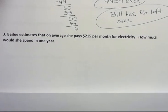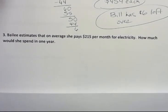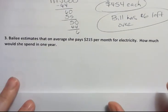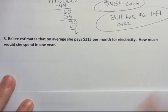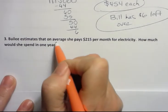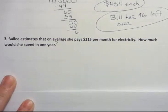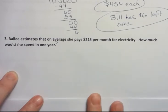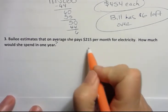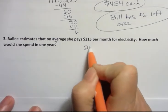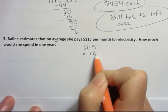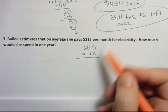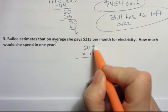The last one says Bailey estimates that on average she pays $215 per month for electricity. How much would she spend in one year? How many months are there in a year? There are 12 months in a year, so we would take 215 times 12 to find the answer. That is you having to know a little bit about life in general.